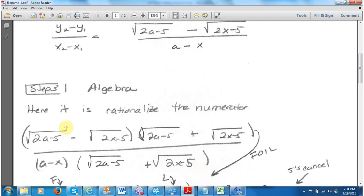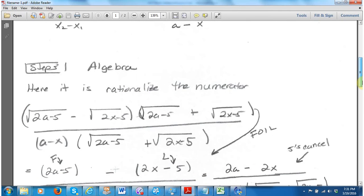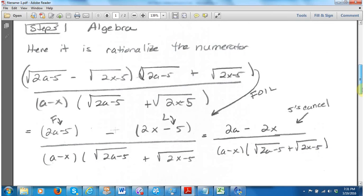As before, now we take the top and we FOIL it. So we're going to take the first two, the outer two, the inner two, and the last two. As in all the other problems like this, the outer and the inner cancel. So I just left them out because this is a lot of writing here.